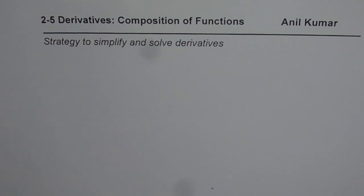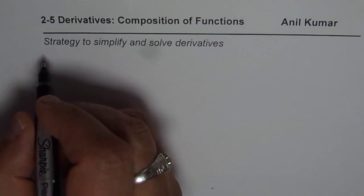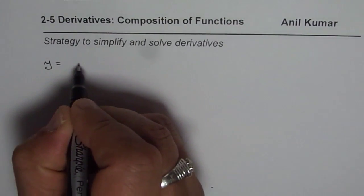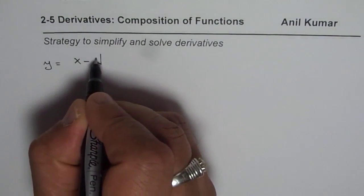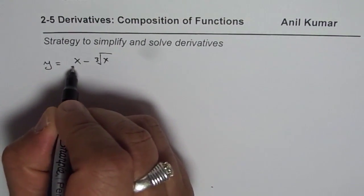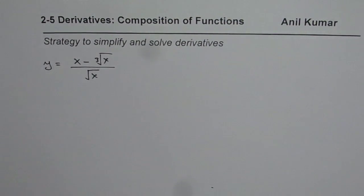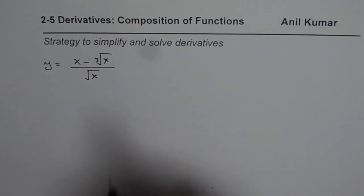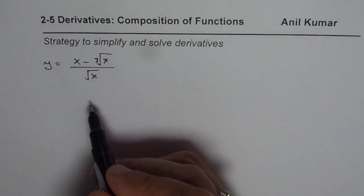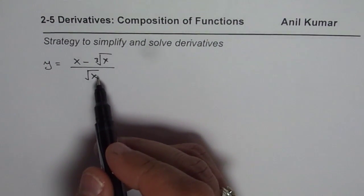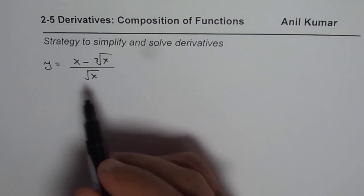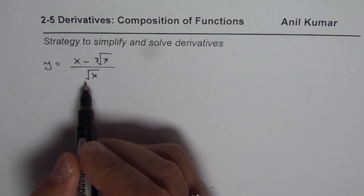The first example is let's say you are given a function y equals x minus cube root of x over square root of x. If you have a function like this and you need to find derivative of such a function, you could use the quotient rule and simplify and then find the solution. You could also simplify the expression.